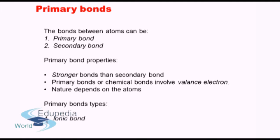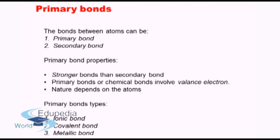What are the types of primary bonds? Broadly speaking, primary bonds can be divided into three categories. First and foremost is called the ionic bond, the second is called the covalent bond, and finally what we have is known as the metallic bond. We will discuss all three of them in detail.